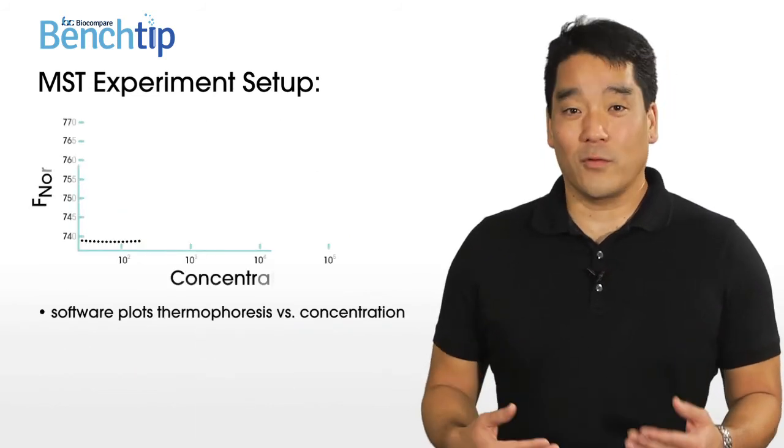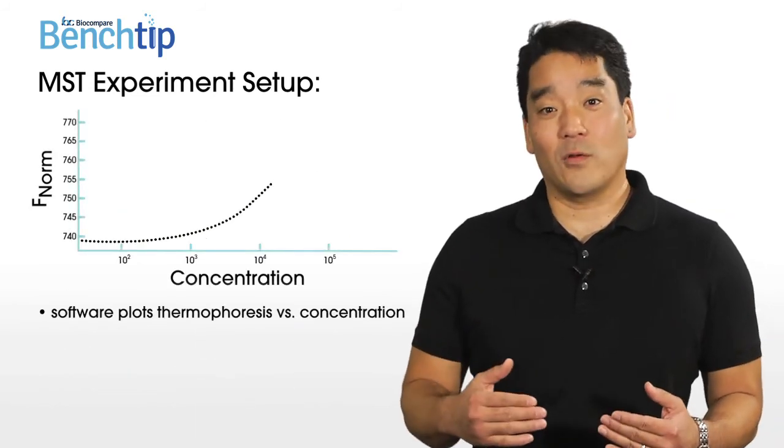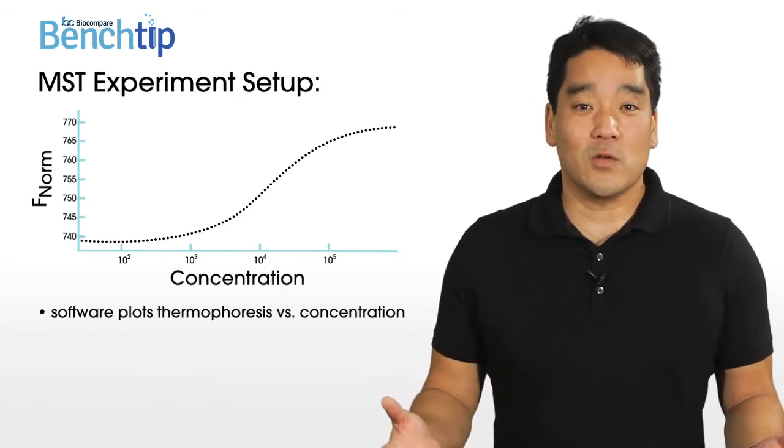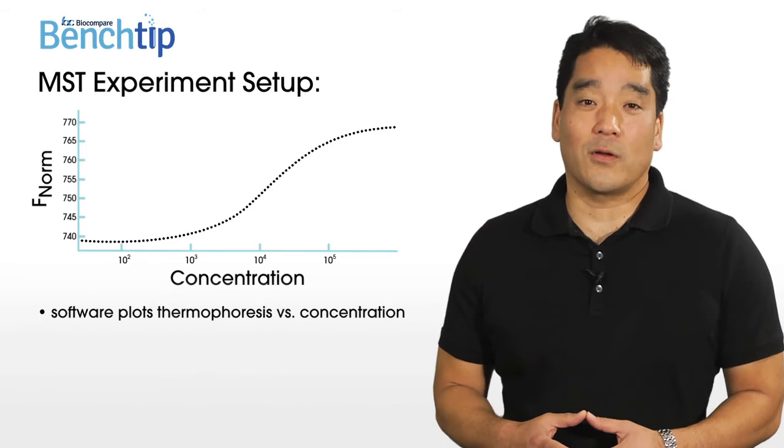Then software plots the thermophoresis signal against the concentration of your ligand, generating a binding curve. In as little as 10 minutes, you can obtain a dissociation constant for your interactions.